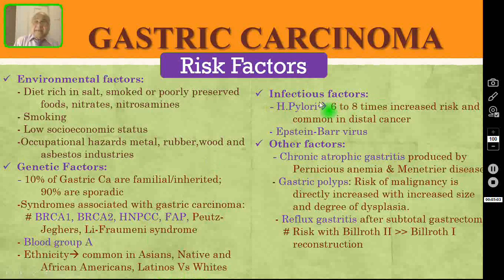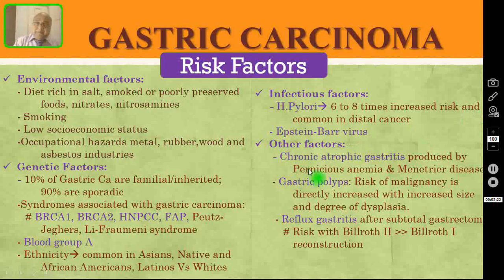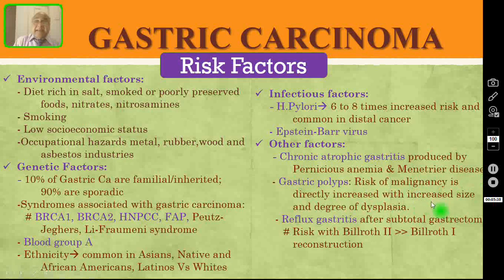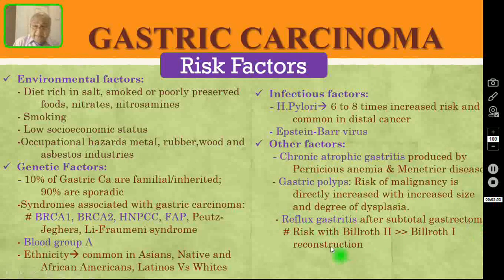Coming to infectious factors: it could be either H. pylori or Epstein-Barr virus. H. pylori causes a six to eight times increased risk and is common in distal cancer, not in the proximal one. Other factors include chronic atrophic gastritis (usually produced by pernicious anaemia or Ménétrier's disease), gastric polyps — where risk of malignancy is directly increased with size and degree of dysplasia — and reflux gastritis after subtotal gastrectomy, with greater risk in Billroth II than Billroth I reconstruction.